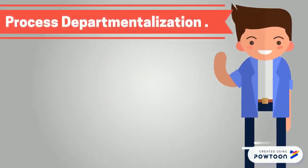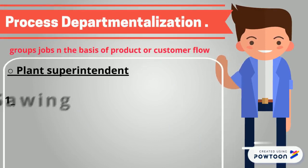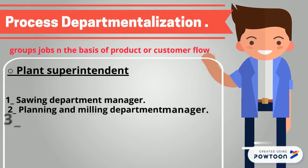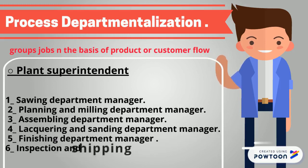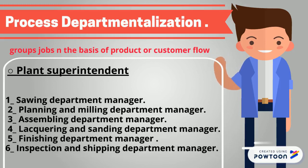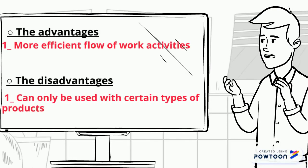Process departmentalization groups jobs on the basis of product or customer flow. Plant superintendent: 1. Sawing department manager, 2. Planning and milling department manager, 3. Assembling department manager, 4. Lacquering and sanding department manager, 5. Finishing department manager, 6. Inspection and shipping department. The advantages: more efficient flow of work activities. The disadvantages: can only be used with certain types of products.